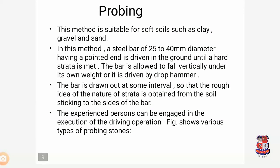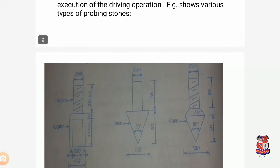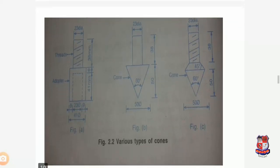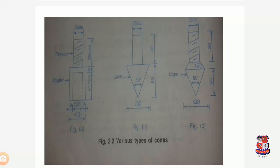The probing method is suitable for soft soils such as clay, gravel, and sand. In this method, a steel bar of 20 to 40 mm diameter having a pointed edge is driven into the ground until a hard stratum is found. The bar is allowed to fall vertically due to its own weight or by a drop hammer. The bar is drawn out at intervals so that a rough idea of the nature of the strata can be found. Experienced persons are engaged in the execution of the driving operation. Different cone shapes — rectangular, conical — are used for different probing requirements.